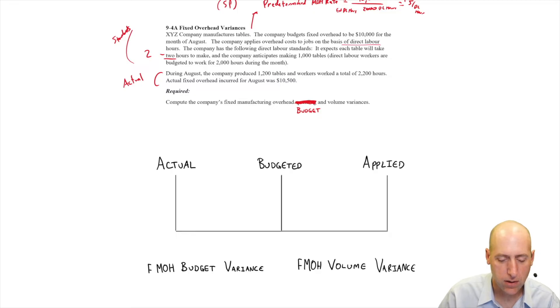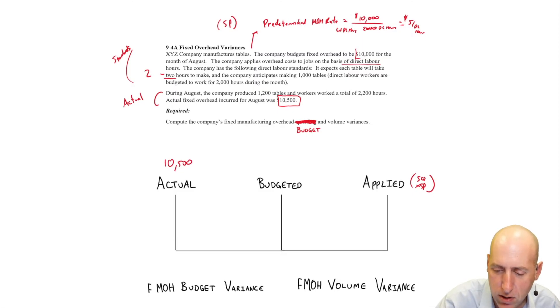So our fixed overhead budget variance is actually very easy to compute. The first variance, and you'll see there's no AQAP, AQSP stuff here, although applied is kind of an SQSP calculation as it would have been in the past. The actual is always going to be generally a given number. Our actual fixed overhead was $10,500. Our budgeted fixed overhead was right at the top $10,000. This is $500 unfavorable. I paid more than I budgeted.